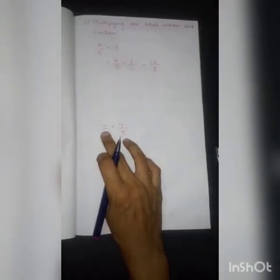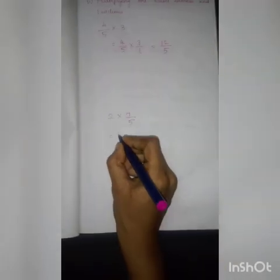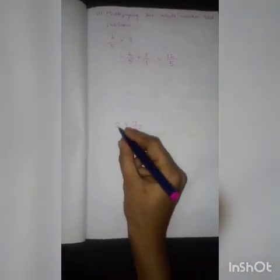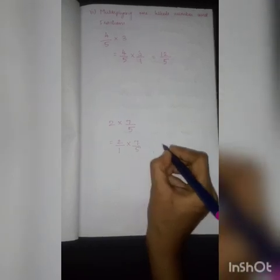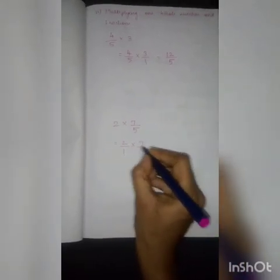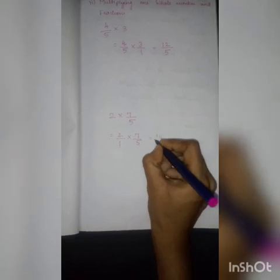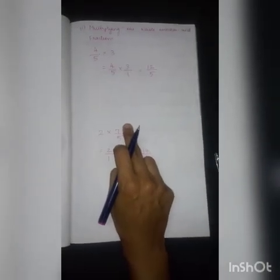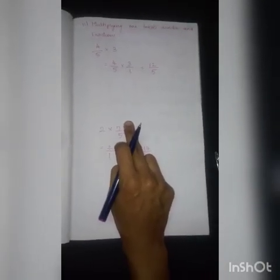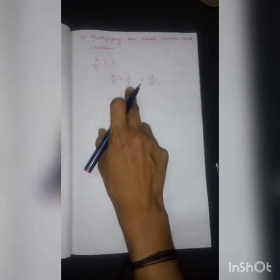Another example: multiplying a whole number and a fraction — 2 into 7 by 5. Write 2 as 2 by 1, then into 7 by 5. Multiply numerator into numerator: 2 into 7 is 14. Denominator into denominator: 1 into 5 is 5. Answer is 14 by 5. This is how you do multiplication of a whole number and a fraction — make the whole number a fraction by dividing by 1, then multiply as usual.